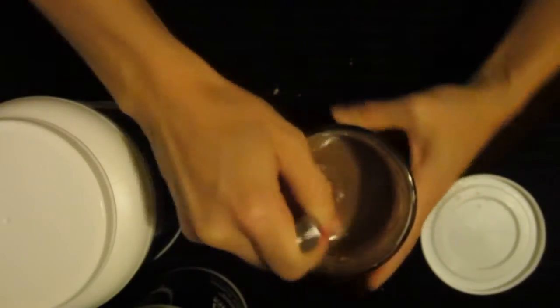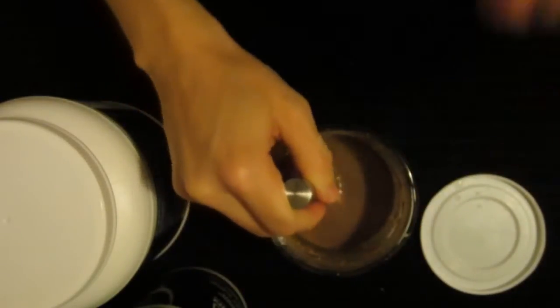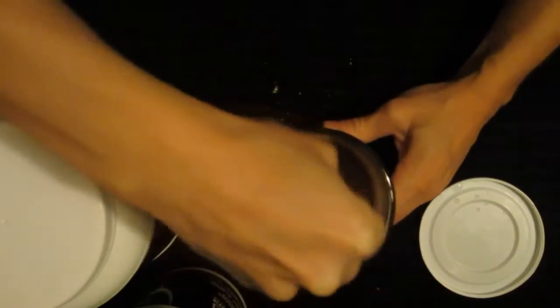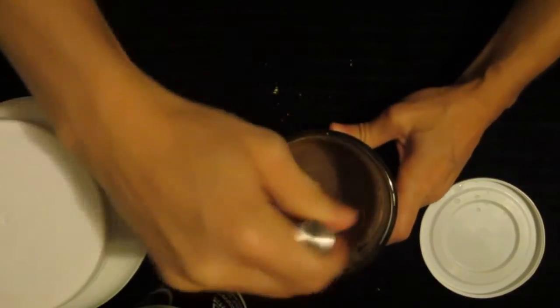You can also use that same technique with blender bottles. You know, put the little ball in there, add about this much water, maybe about an inch of water or milk or whatever liquid you're using, and then you put in your powders and whatnot. It keeps it from getting stuck in the corners.